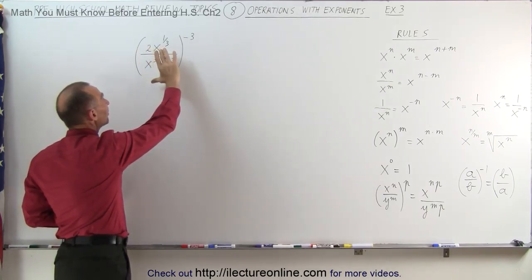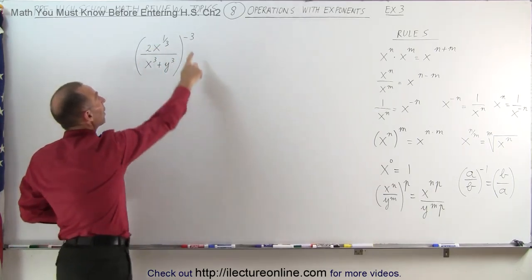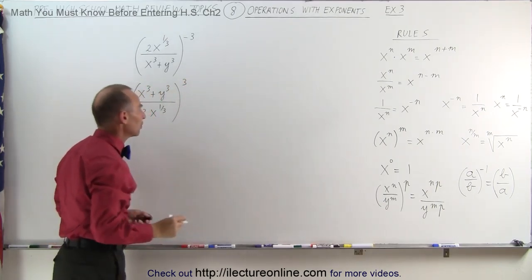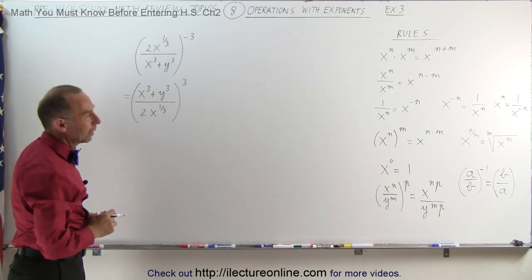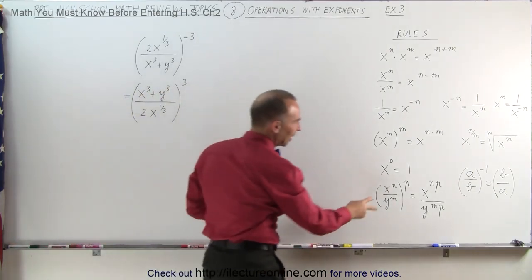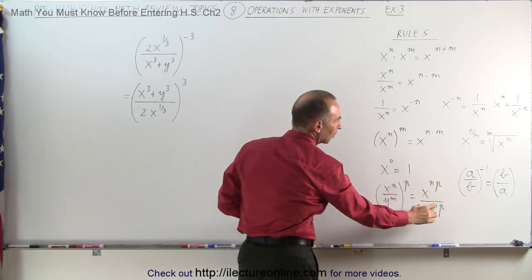What's inside the parentheses is a fraction, which means we can turn this into a positive exponent simply by turning the fraction upside down. So this can now be written as x cubed plus y cubed divided by 2x to the 1/3 power, the whole thing now raised to the positive 3 exponent.